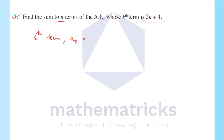The kth term equals 5k plus 1. For the first term, k equals 1: a1 equals 5 into 1 plus 1, that is equal to 5 plus 1, that is 6. So a1 equals 6.